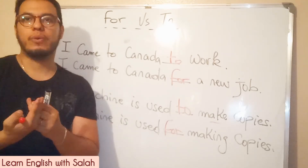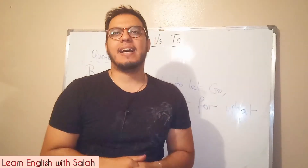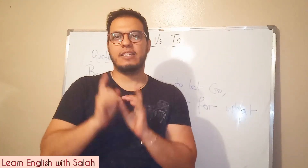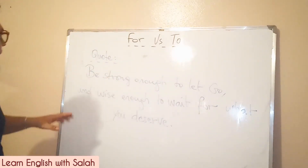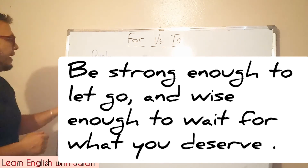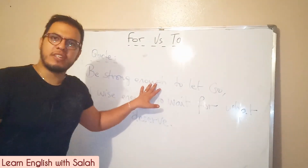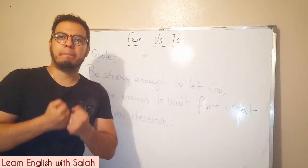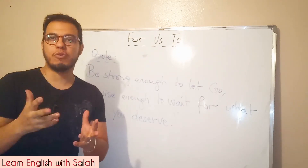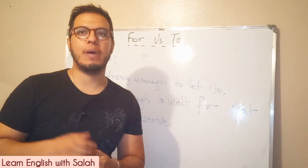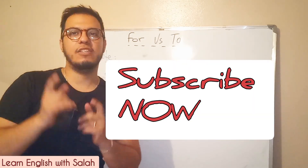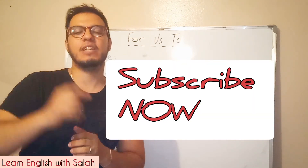I hope that you now get the difference between 'to' and 'for' and can use them easily. Let's move to the quote: 'He's strong enough to let go and wise enough to wait for what you deserve.' This inspiration gives us the power to be patient and wait for the opportunity to show ourselves to the world. Try to be patient and strong enough to bear difficulties and problems so as to overcome them. Thank you very much for watching — see you in the next video, take care, bye bye!